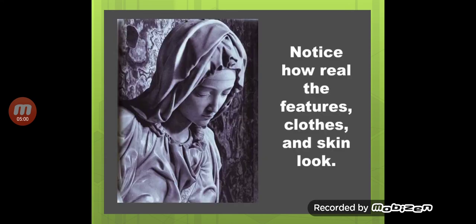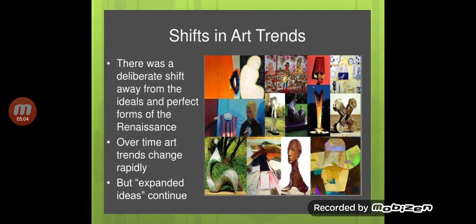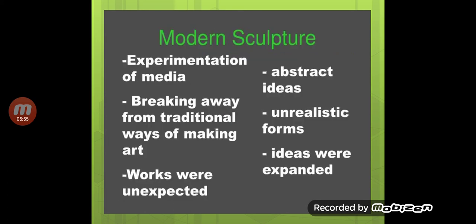Over time, shifts in art trends occurred — things changed gradually. More additions were made, and alongside additions, in a way subtractions also happened — objects came forward in a more simplified form. There was a deliberate shift away from the ideals and perfect forms of the Renaissance. Over time art trends changed rapidly, but expanded ideas continued. Different artists made different choices — some preferred wood, some worked in marble, some did bronze casting — bringing variations within this field.